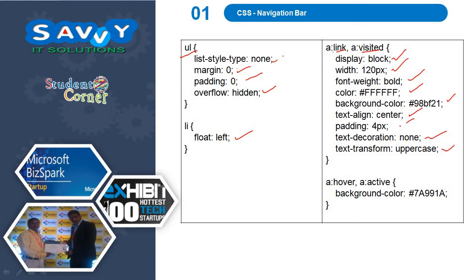Text-transform is uppercase, so whenever we are typing lowercase text it automatically changes to uppercase. When we mouse over or it is an active link, only the background color changes from the default to the hover or active state.